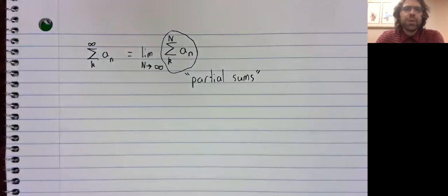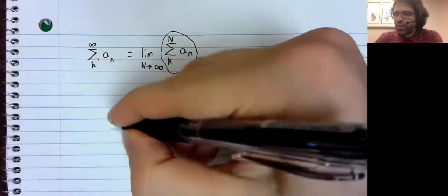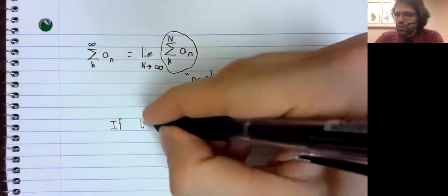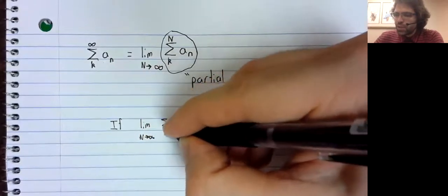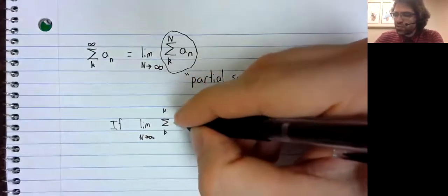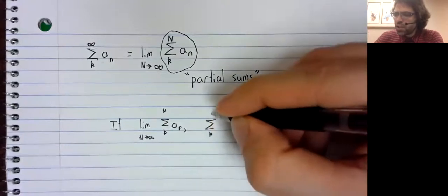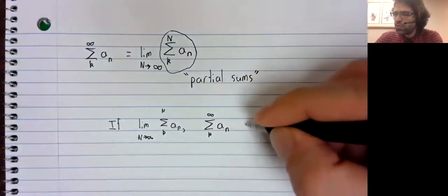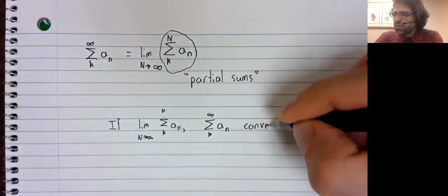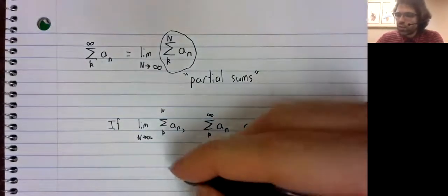And that limit might exist, or it might not. If this limit exists, then using the terminology we used back in improper integrals, this series converges.